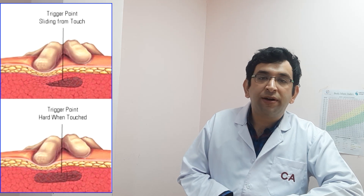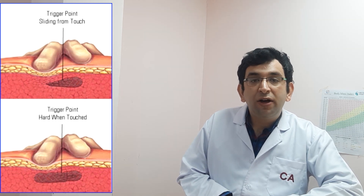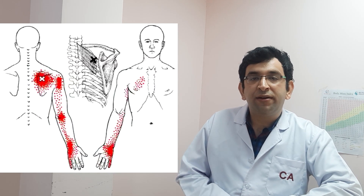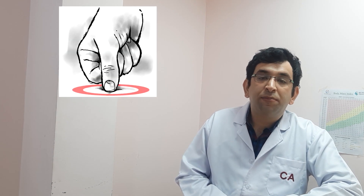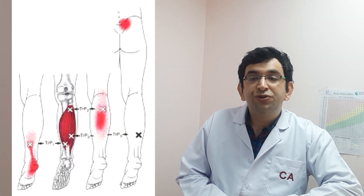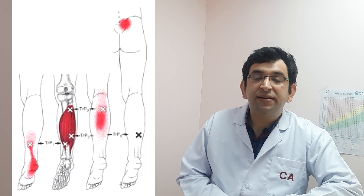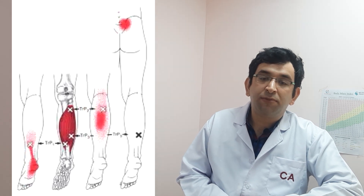Palpation of the trigger point can cause pain directly on the affected area and radiation of pain towards a referral zone, along with a local twitch response. Direct compression of the trigger point can cause what is called a jump sign, or it can give local tenderness, a local twitch response, and referred pain — which usually responds with a pain pattern distant from the spot.